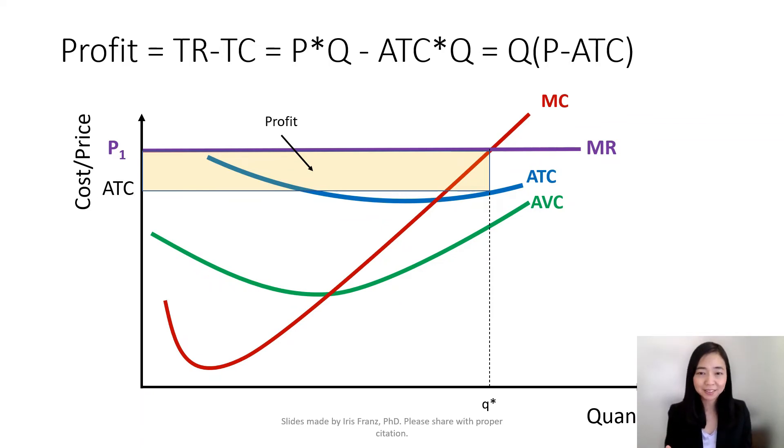So what is our current quantity? Our current quantity is Q star. And our price is given, it is P1. Where is our average total cost? We'll have to look for that. So we know average total cost is that blue line. And at the current quantity Q star, we're going to look for our average total cost. That's exactly here.